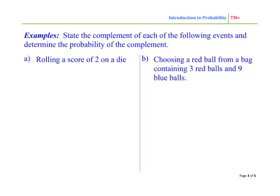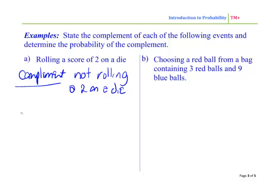So let's look at some examples. State the complement of each of the following events and determine the probability of the complement. Rolling a 2 on a die. Well, the complement is not rolling a 2 on a die. So the probability of getting a 2 is 1 in 6. The probability of not getting a 2 would be 5 in 6.